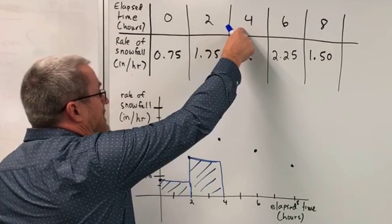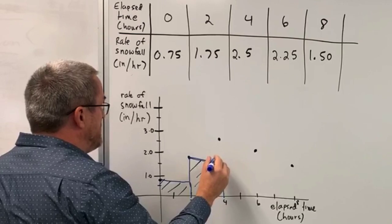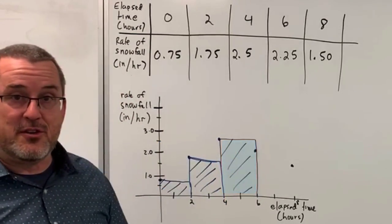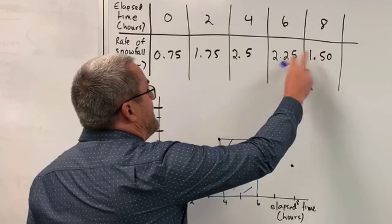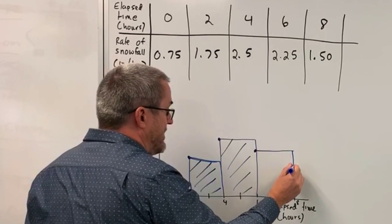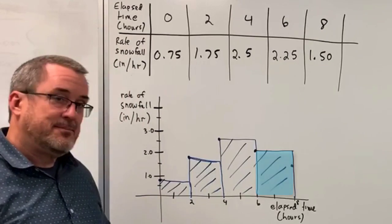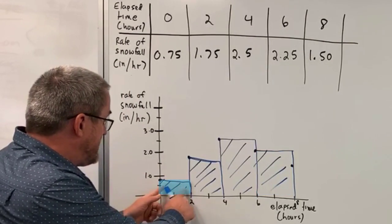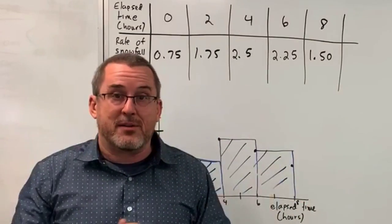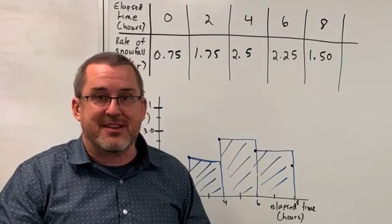Continuing that pattern: from hours four to six, let's suppose the snowfall remained at a constant rate of 2.5 inches per hour for the next two hours — the area of this rectangle is an estimation for snowfall during that interval. And for the last two hours, let's suppose the snowfall rate remained at 2.25 inches per hour. Totaling up the snowfall from each of these two-hour increments gives another estimation for total snowfall over eight hours, and it may be more accurate since we're accounting for the varying rates rather than just one average.